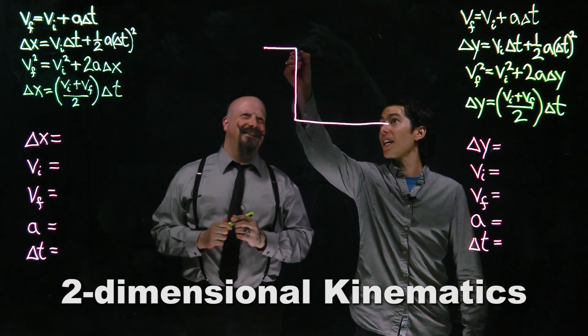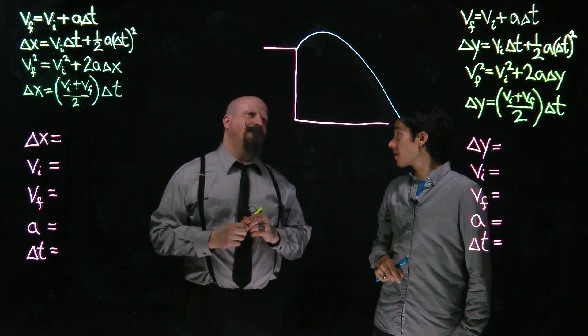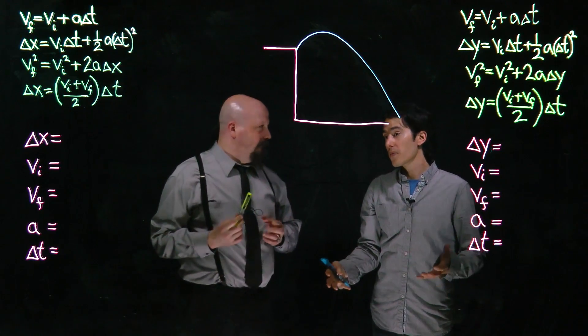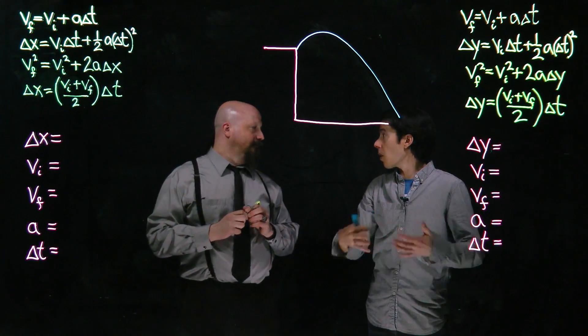Let's look at a standard problem of projectile motion. Say we have an object that's launched off a cliff and lands some distance down below. Now all these problems, they can vary in the numbers, the information you're given, but the structure of solving them is always going to be the same.